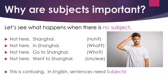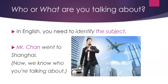In some languages, that's okay. But in English, it is confusing. In English, sentences need subjects. Who or what are you talking about? In English, you need to identify the subject. For example, 'Mr. Chun went to Shanghai.' Now we know who you're talking about.